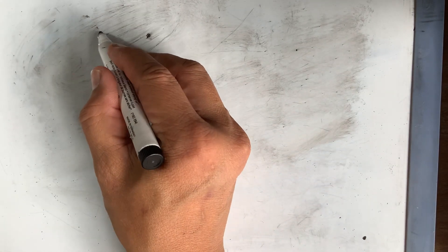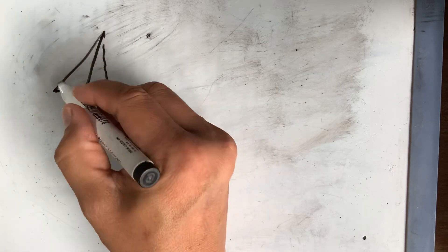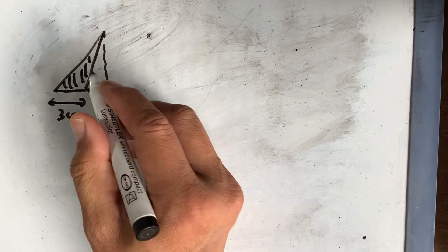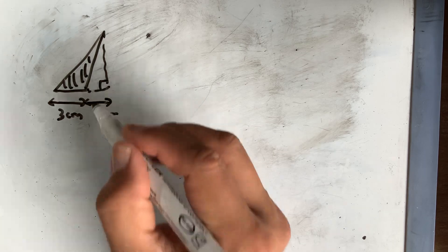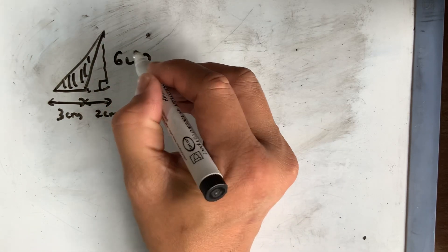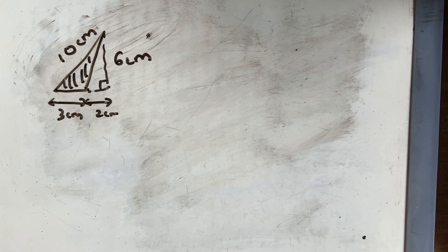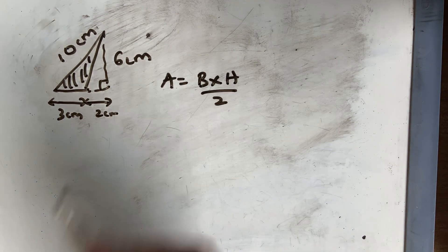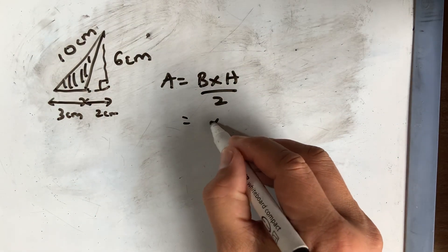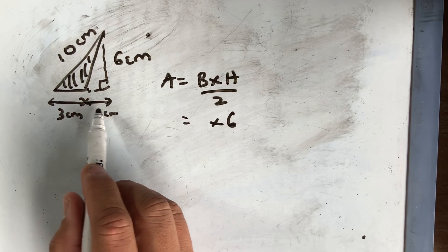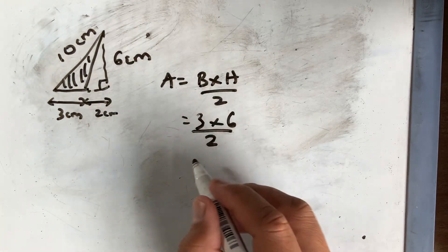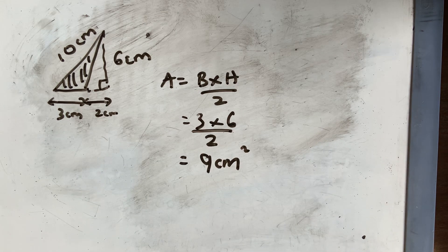Now what happens if you have a triangle that looks like this? I want to find the area of that triangle. If that side is 3 cm, that is 2 cm, and that angle is 90 degrees, and the height is 6 cm while the slant height is 10 cm — that looks a bit harder. The area is again base times height divided by 2. The height is 6, and it must be perpendicular to the base. Do you use 3 or 5 as the base? If you use 5 you'd find the area of the whole triangle, so the base has to be 3, and the height is 6. The answer is 9 cm squared.